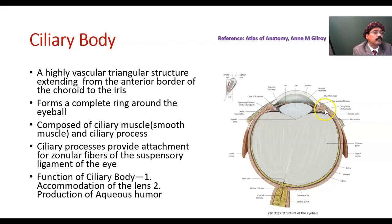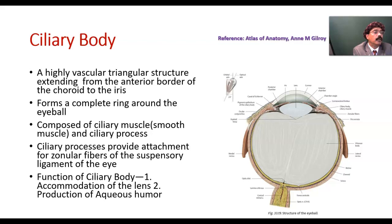If there is contraction of the ciliary muscle, there will be a decrease in the size of the ring. So the tension over the lens will be decreased, and the lens will be more convex for near vision focusing. That is called accommodation.